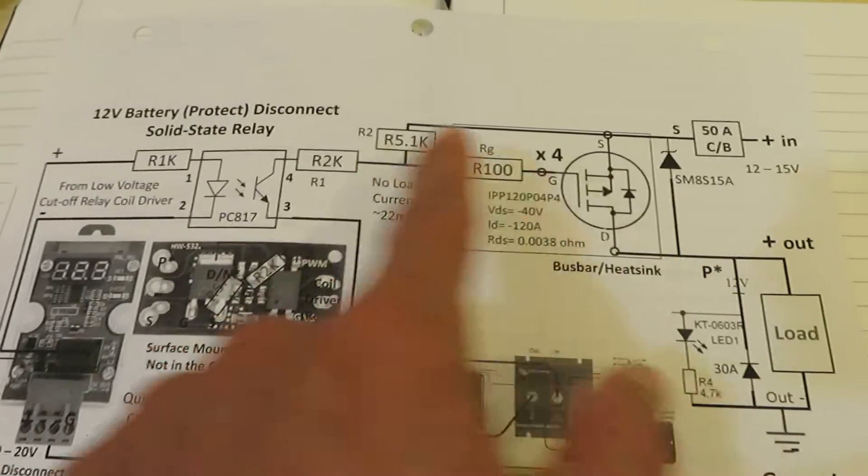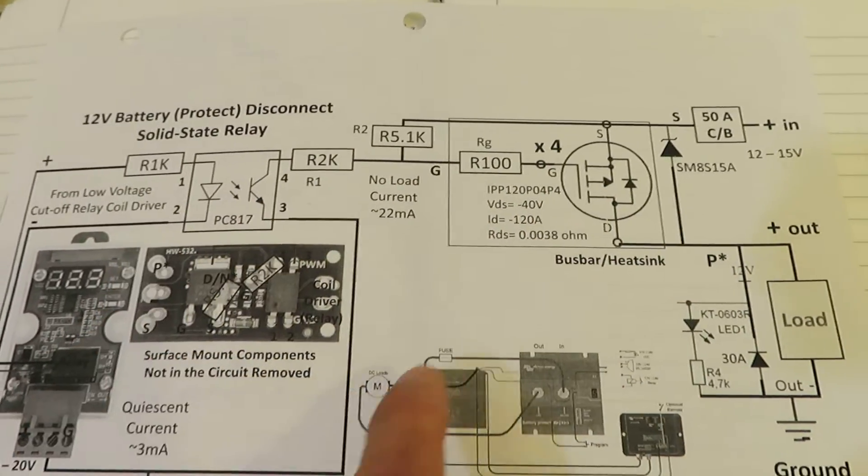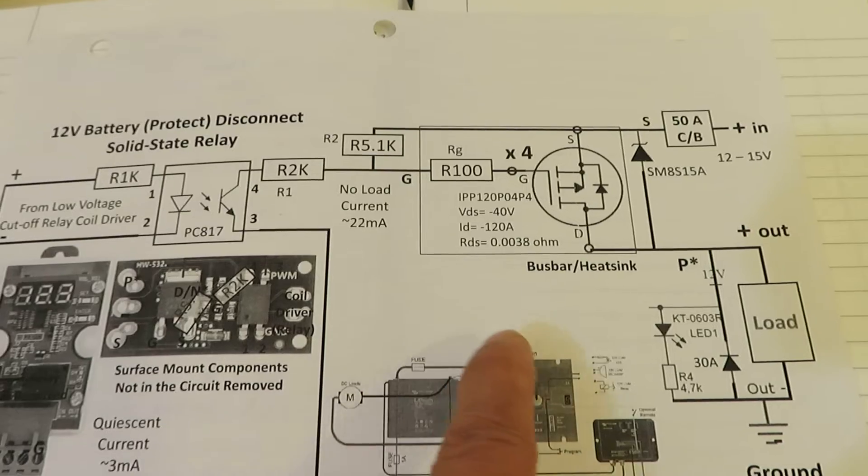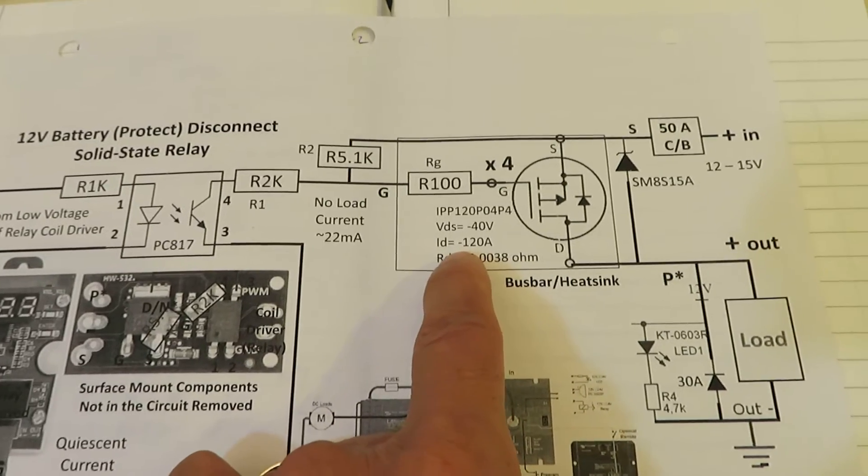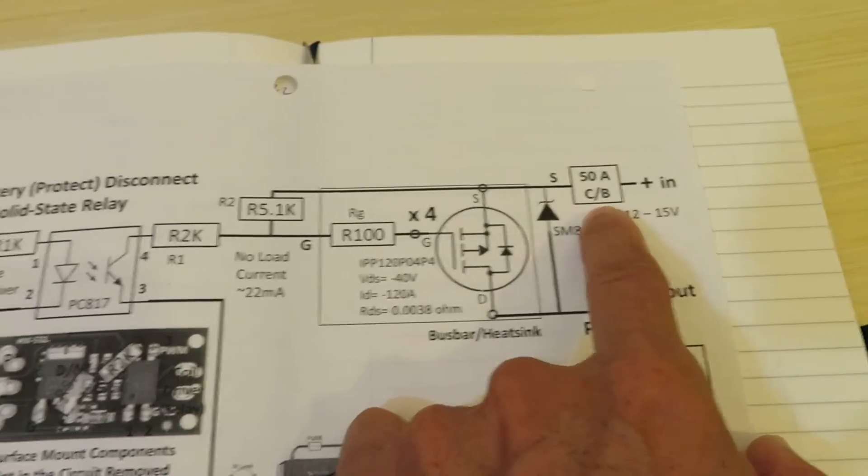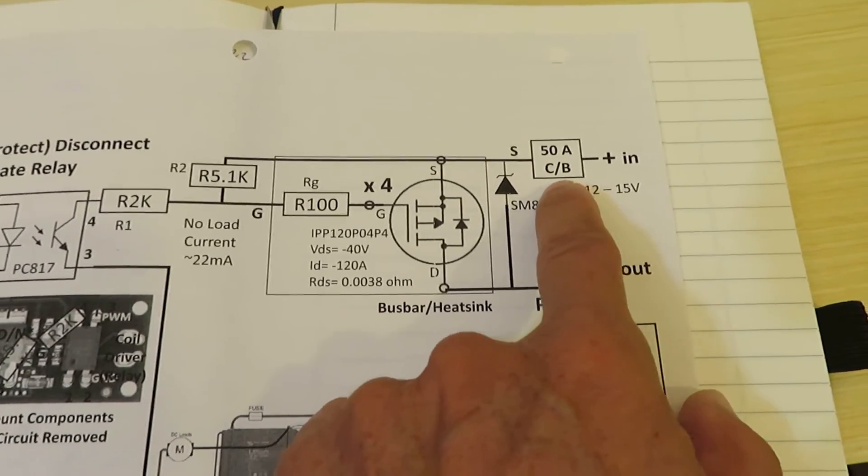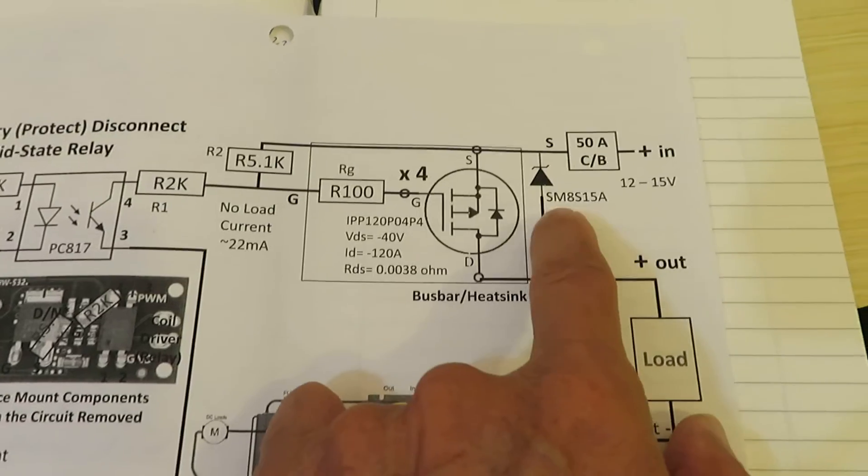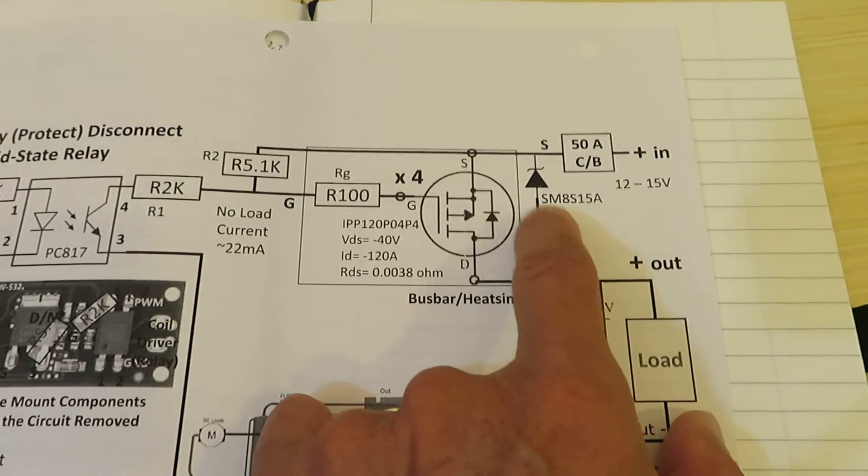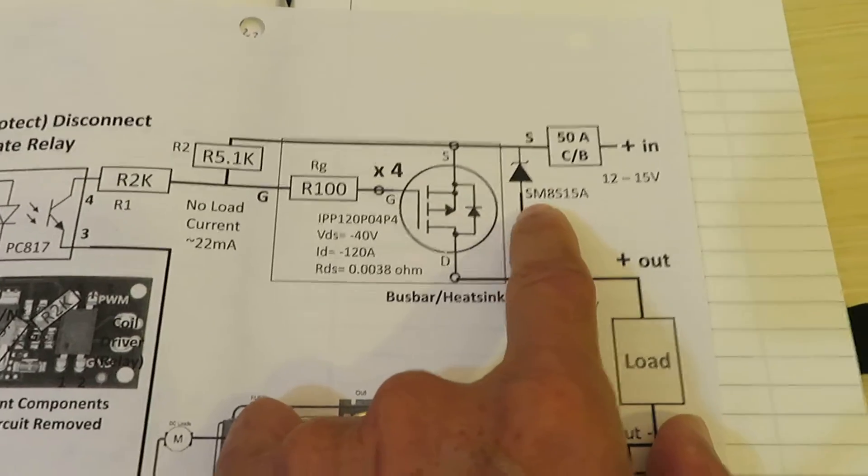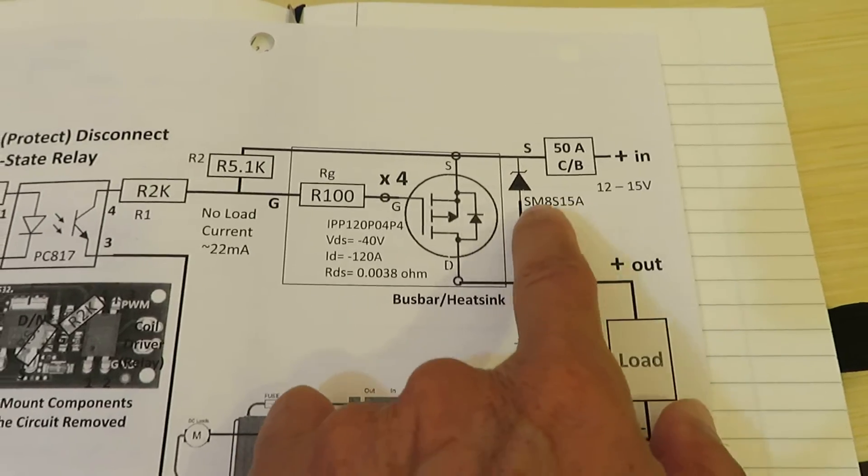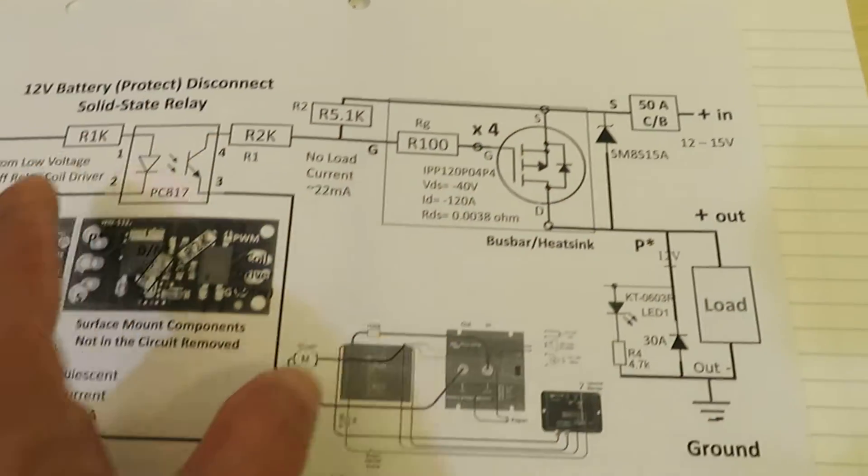And this design is capable of running about 80 amps. And right now I only need 30 amps so I put a 50 amp circuit breaker in here. So this is a 50 amp circuit breaker. And the other day I tested a transient voltage suppression diode. And it's being used in this circuit.